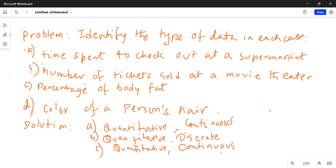Just for example, say 30% body fat. So 30.2% is also possible. So this is quantitative and continuous data. Percentage of body fat.